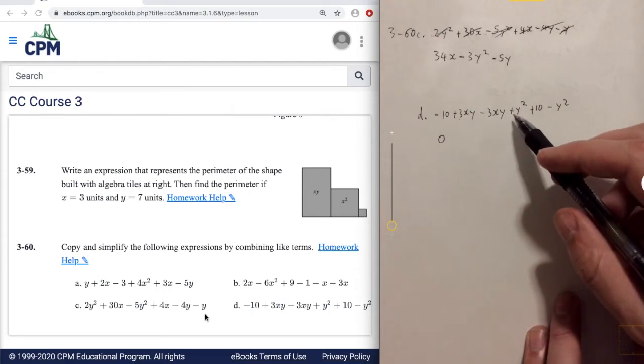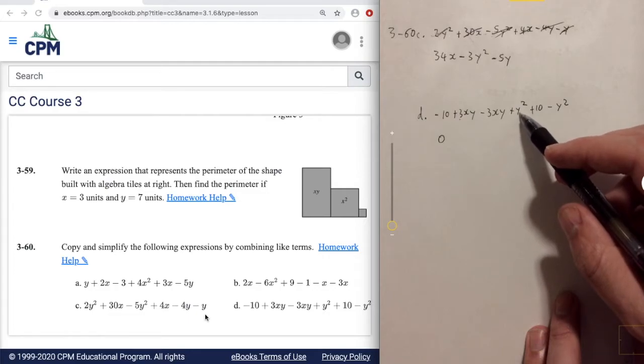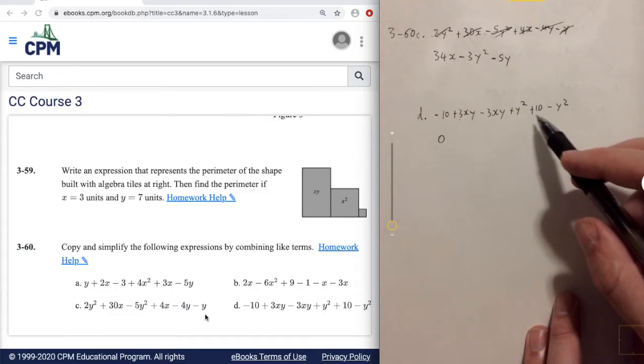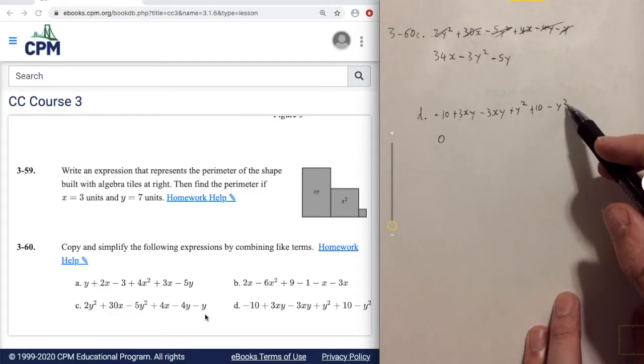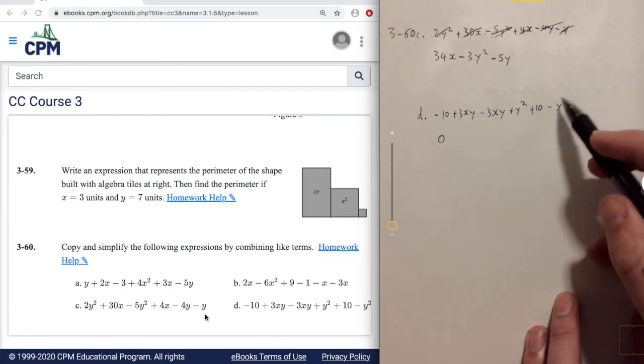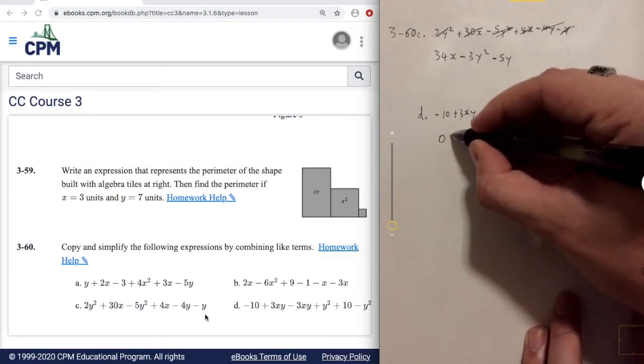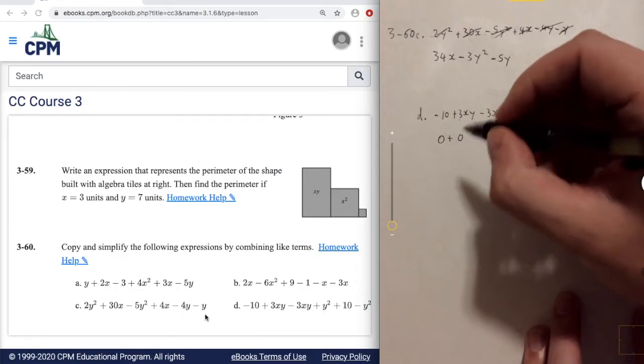Now let's grab the y squared. So we have a positive y squared and we also have a negative y squared. So once again, because we have the same amount of positive and negative, they're going to cancel out. And we're just going to get plus zero again.